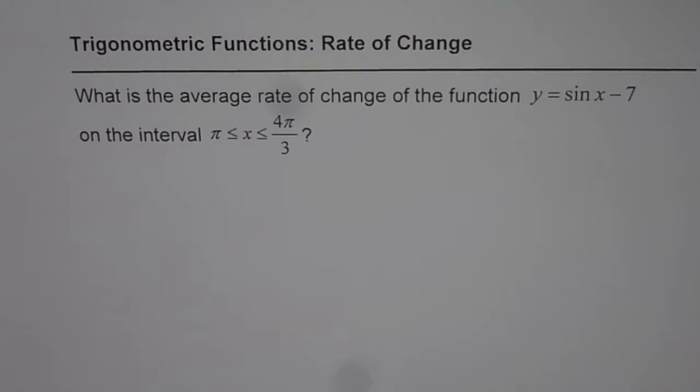The question here is, what is the average rate of change of the function y equals sine x minus 7 on the interval x is greater than or equal to pi and less than or equal to 4 pi by 3?